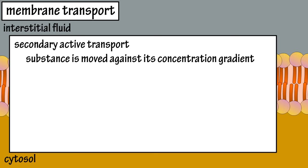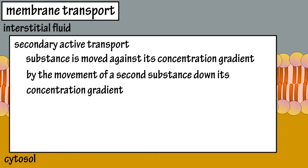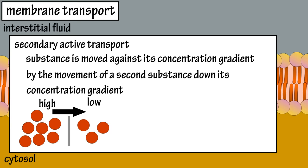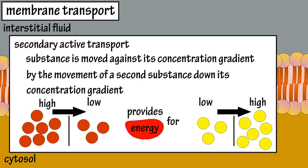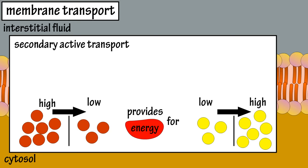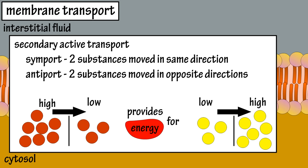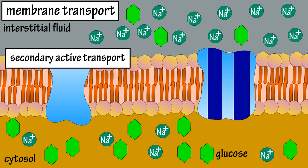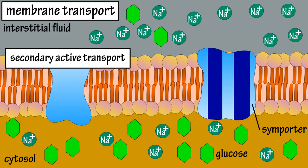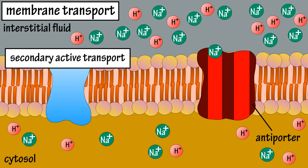In secondary active transport, a substance is moved against its concentration gradient using energy provided by the movement of a second substance down its concentration gradient. So a substance moving from high to low concentration provides the energy to move a second substance from low to high concentration. There are two types: symport, where two substances are moved in the same direction, and antiport, where two substances are moved in opposite directions. For example, Na+ ions moving from high concentration outside the cell to lower concentration inside provide energy for a symporter to move glucose from low to high concentration. An antiporter uses the same sodium gradient to move H+ out of the cell against its gradient.